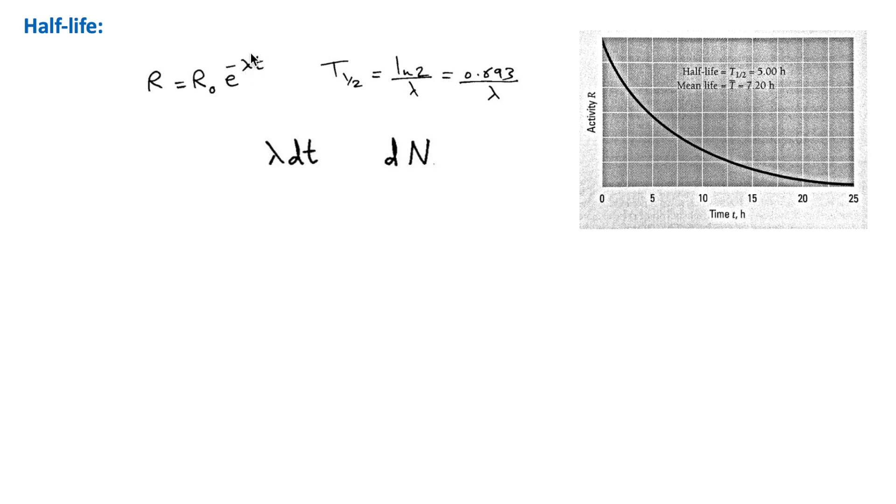Lambda is the probability per unit time, and so this quantity lambda dt is the probability that any nucleus will undergo decay in a time interval of dt.